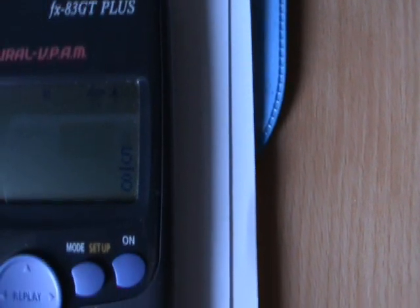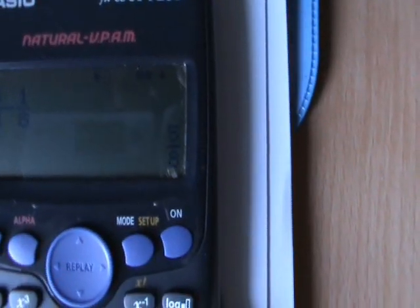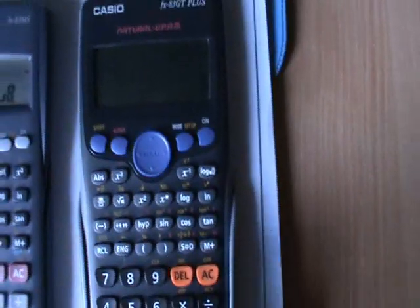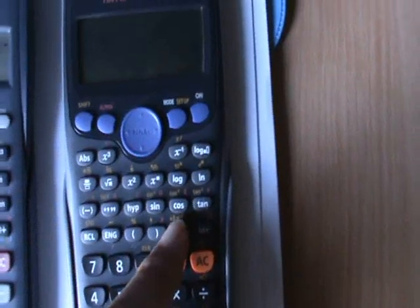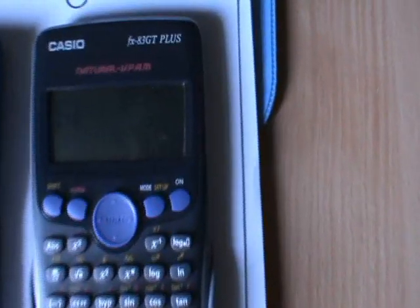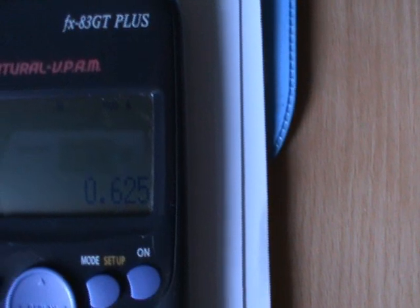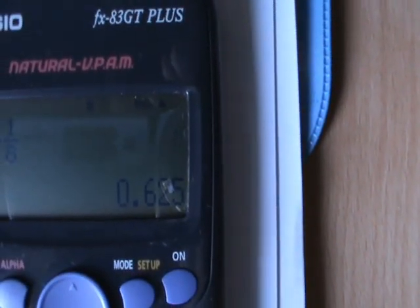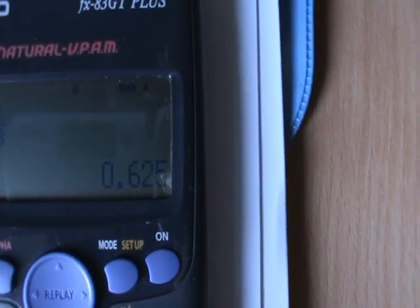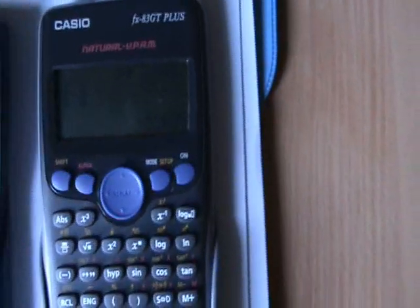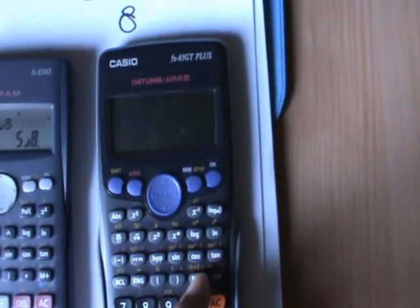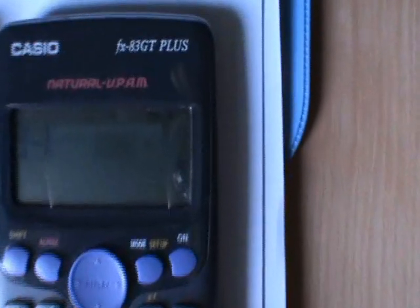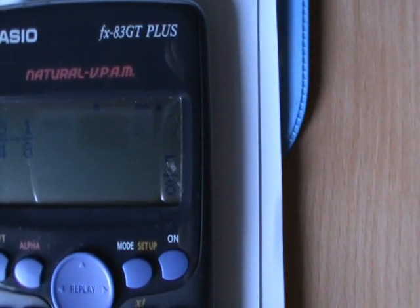The other very nice thing about this calculator is, now if I want to, I can press the SD button, which is here. And that changes the 5 eighths into a decimal. So we can see that 5 eighths equals 0.625. And if I press it again, it takes it back to a fraction again, 5 eighths.